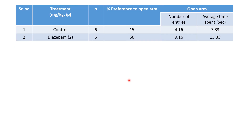Summarizing the mean values: percent preference to open arm is 15 for control and 60 for diazepam; number of entries to open arm is 4.16 for control and 9.16 for diazepam; average time spent in the open arm is 7.83 seconds for control and 13.33 seconds for diazepam.